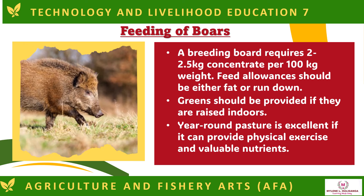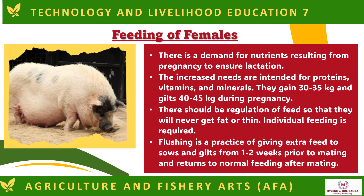Feeding boars: a breeding boar requires 2–2.5 kilograms of concentrate per 100 kilograms of weight. Feed allowances should neither be too fat nor too lean. Greens should be provided if they are raised indoors year-round; pasture is excellent as it provides physical exercise and valuable nutrients. Feeding females: there is a demand for nutrients resulting from pregnancy to ensure lactation. Increased needs are for proteins, vitamins, and minerals. Sows gain 30 to 35 kilograms and gilts 40 to 45 kilograms during pregnancy. Feed should be regulated so they never get too fat or thin, and individual feeding is required. Flushing is the practice of giving extra feed to sows and gilts one to two weeks prior to mating, returning to normal feeding after mating.